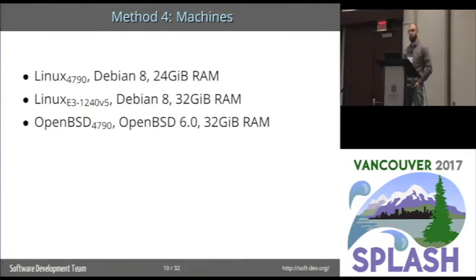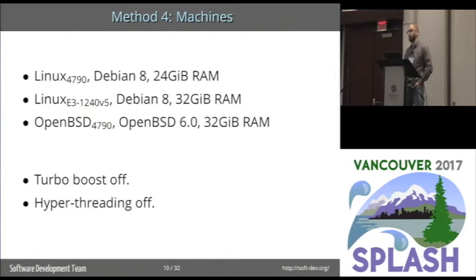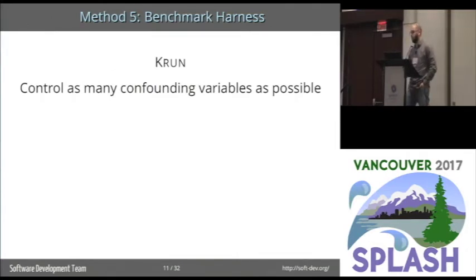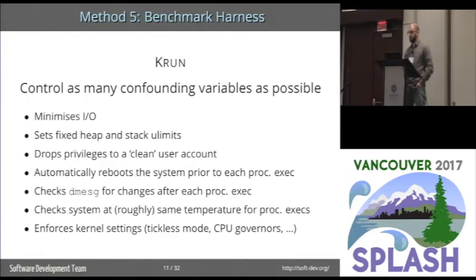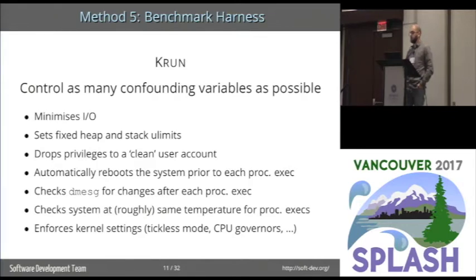Next up are machines: two Linux machines and one OpenBSD machine. We went into the BIOS and turned off Turbo Boost and Hyperthreading, because those are confounding variables. We ran a custom harness called CRUN. The idea behind CRUN is that it controls as many confounding variables as humanly possible. CRUN minimizes I/O, sets memory limits, drops privileges to a freshly made user account for each process execution, reboots the system prior to each process execution, checks the dmesg buffer for anything indicating something went wrong, checks the temperature before each process execution, and more. We've really tried very hard to measure only the characteristics of the benchmark running on the VM, and nothing outside.